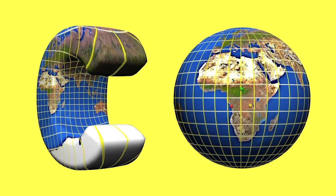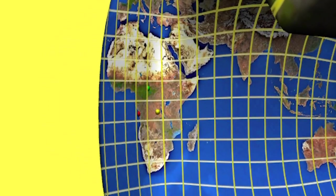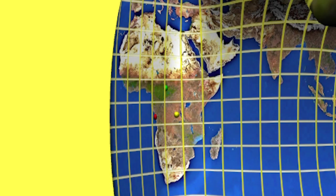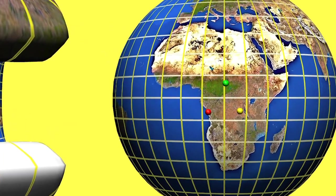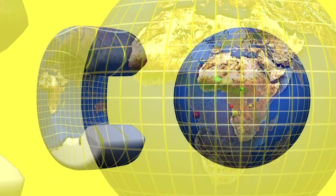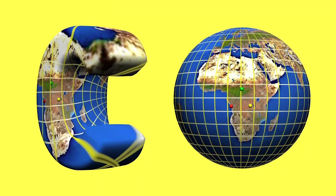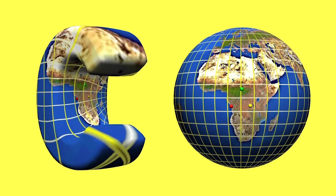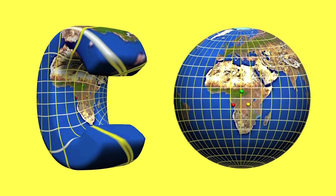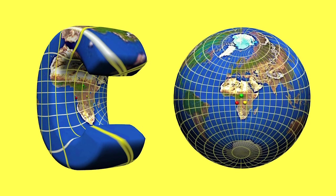A conformal map to the sphere is determined by choosing any three points on the original surface to map to any three points on the sphere. The resulting family of conformal maps can be visualized either by moving the three points on the original surface or the three points on the sphere.